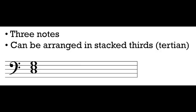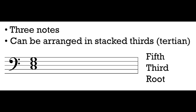C to E is a third and E to G is a third. The word I'm going to be using a bunch is tertian. Tertian means relating to thirds, and so a triad is a tertian chord, a chord that's built up of stacked thirds. If we have a chord that's three notes and can be arranged in stacked thirds, chances are it's going to be a triad.